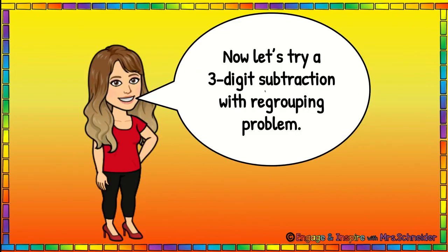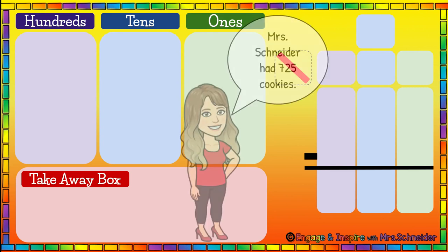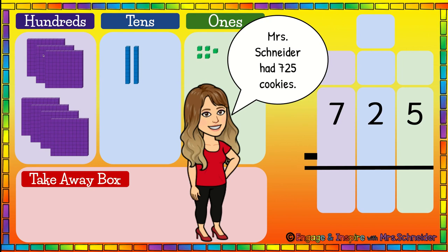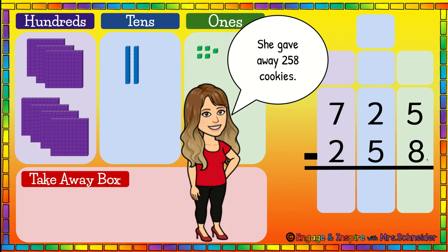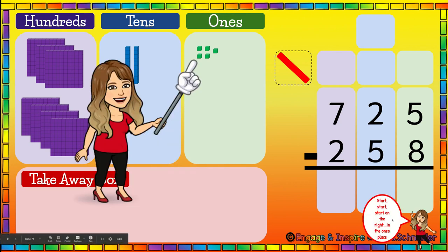Mrs. Schneider still had thirty-five cookies left. Now let's try a three-digit subtraction with regrouping problem. Mrs. Schneider had seven hundred twenty-five cookies. She gave away two hundred fifty-eight cookies, so we're going to subtract two hundred fifty-eight. How many cookies does Mrs. Schneider have left? To solve this problem, we're going to start on the right in the ones place.